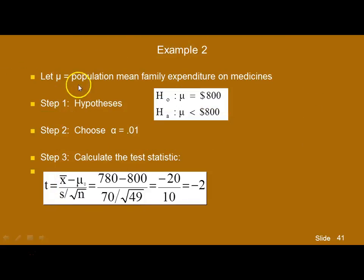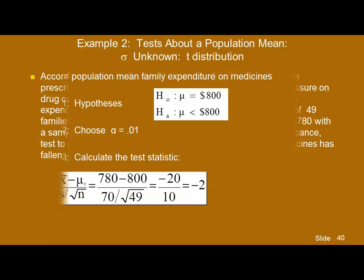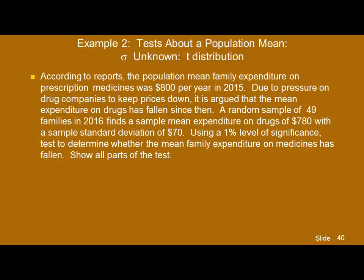Let mu be the mean family expenditure on medicines. Is the mean still $800 the way it was in the past, or has it fallen below $800? That gives us our null and alternative hypotheses. Notice we have a one-tailed, left-sided test. Also, nowhere in the problem do they give you the population standard deviation — you only have the sample standard deviation, and that's what tells you that you're going to have to use the T distribution.